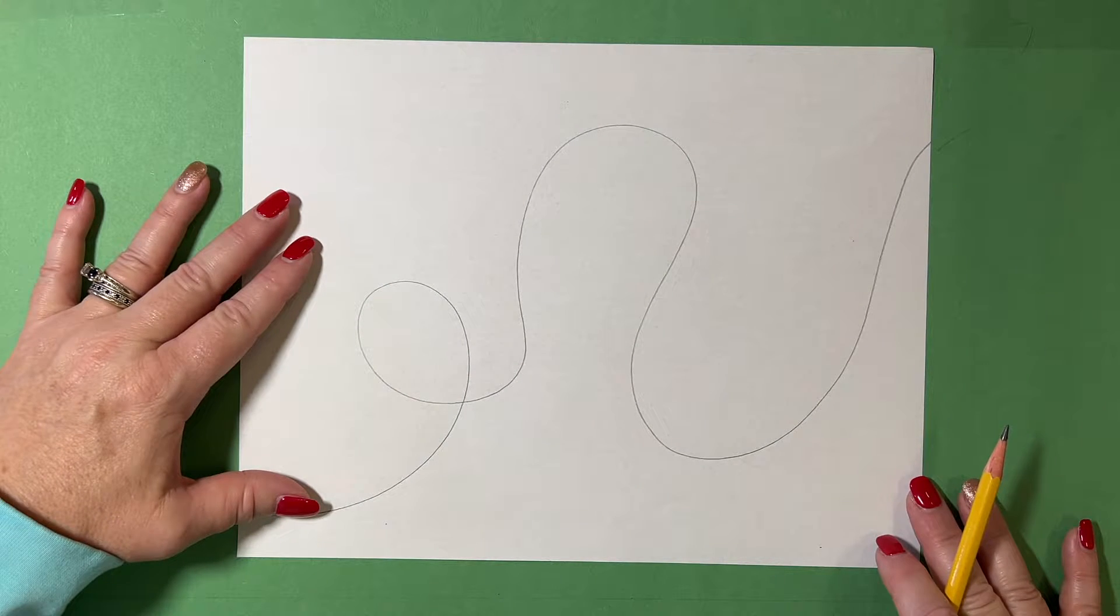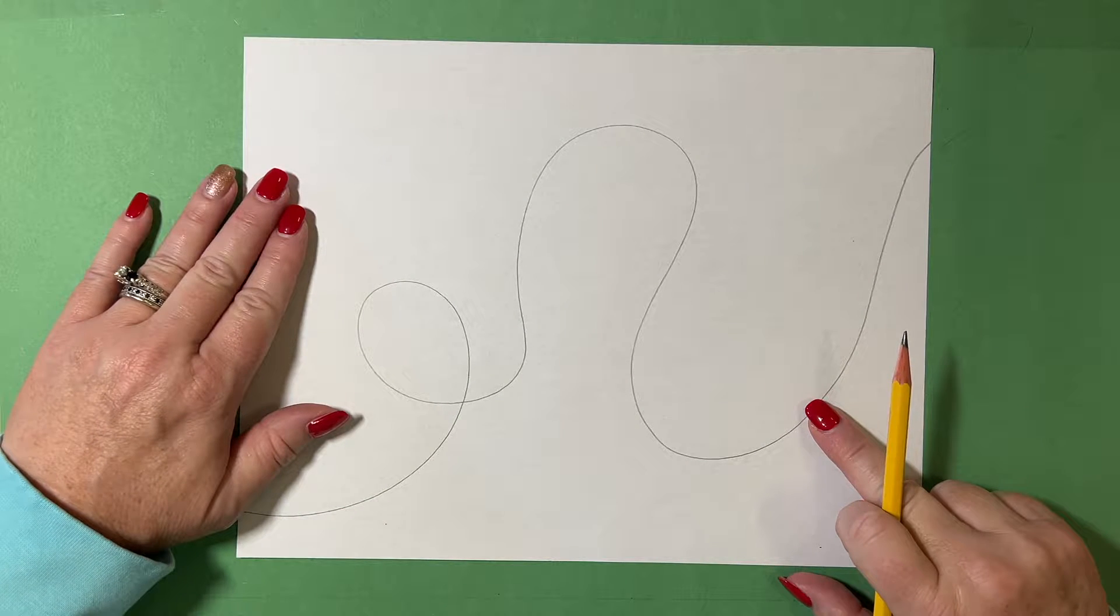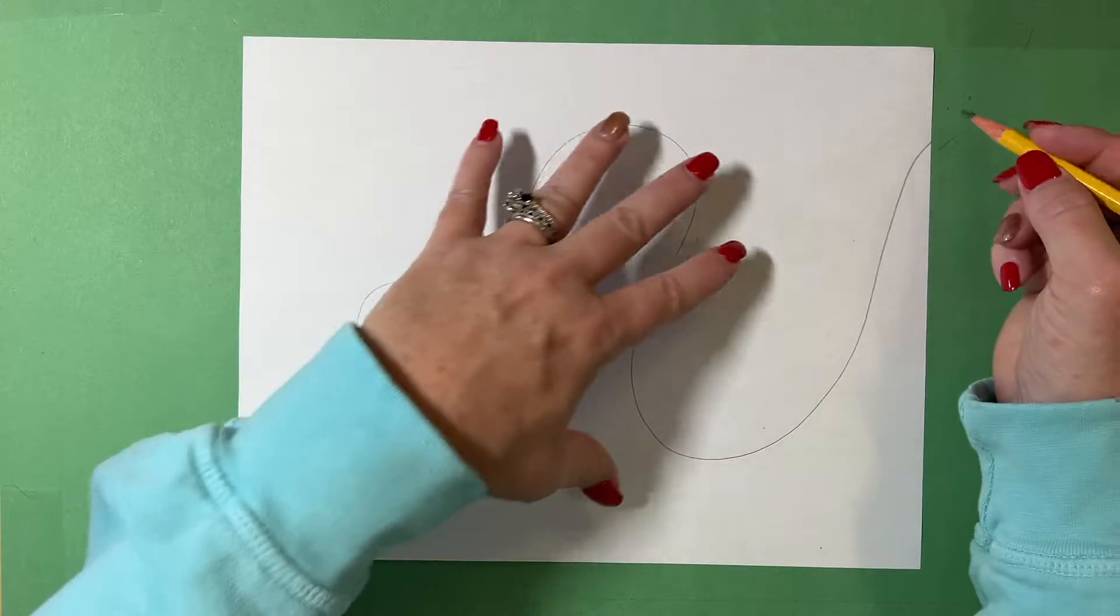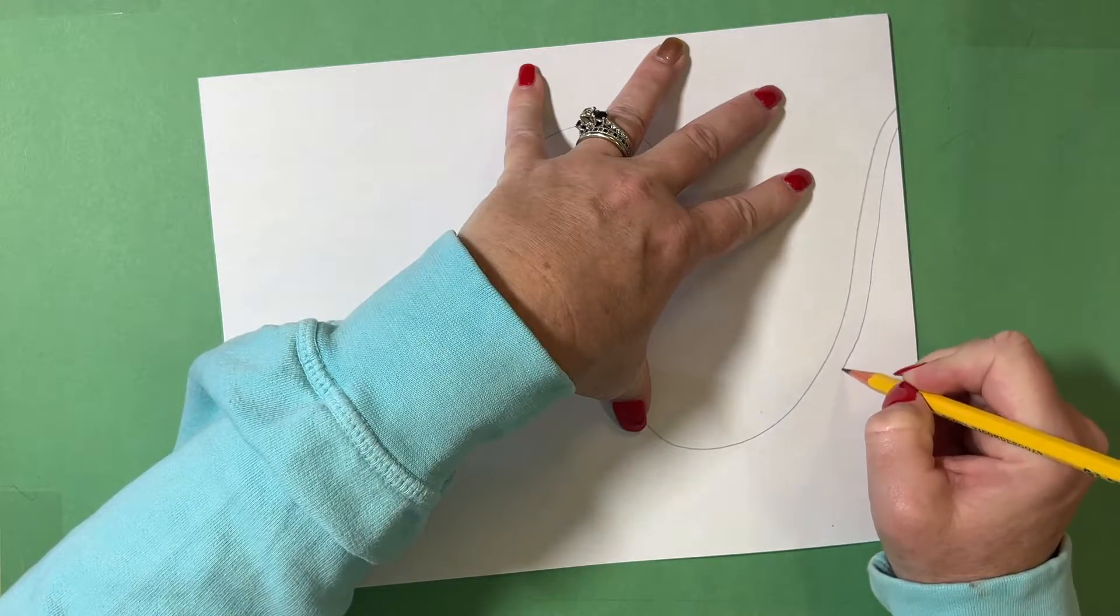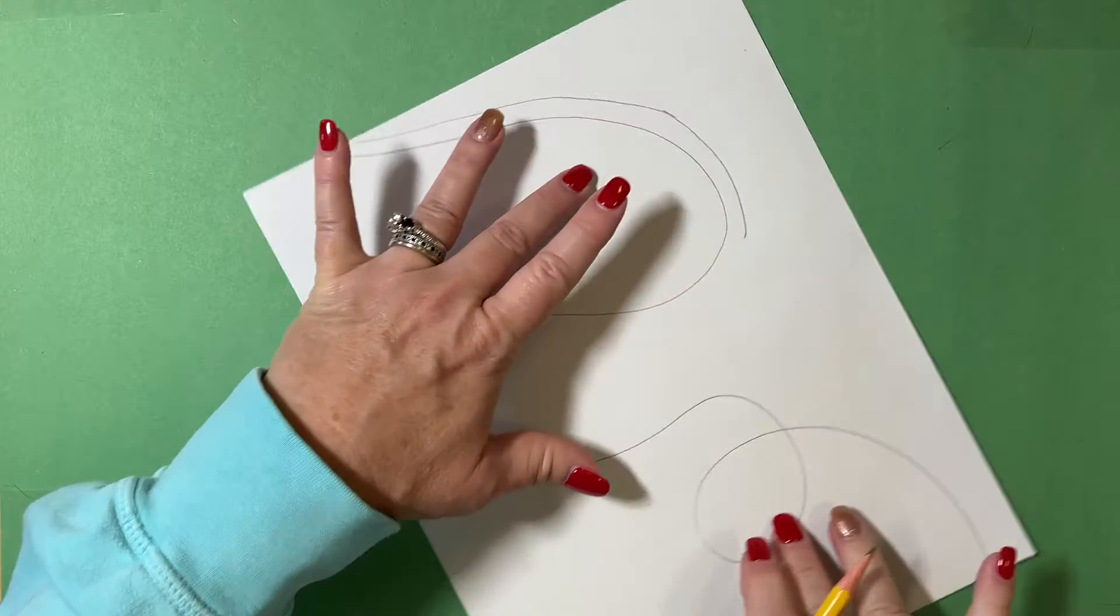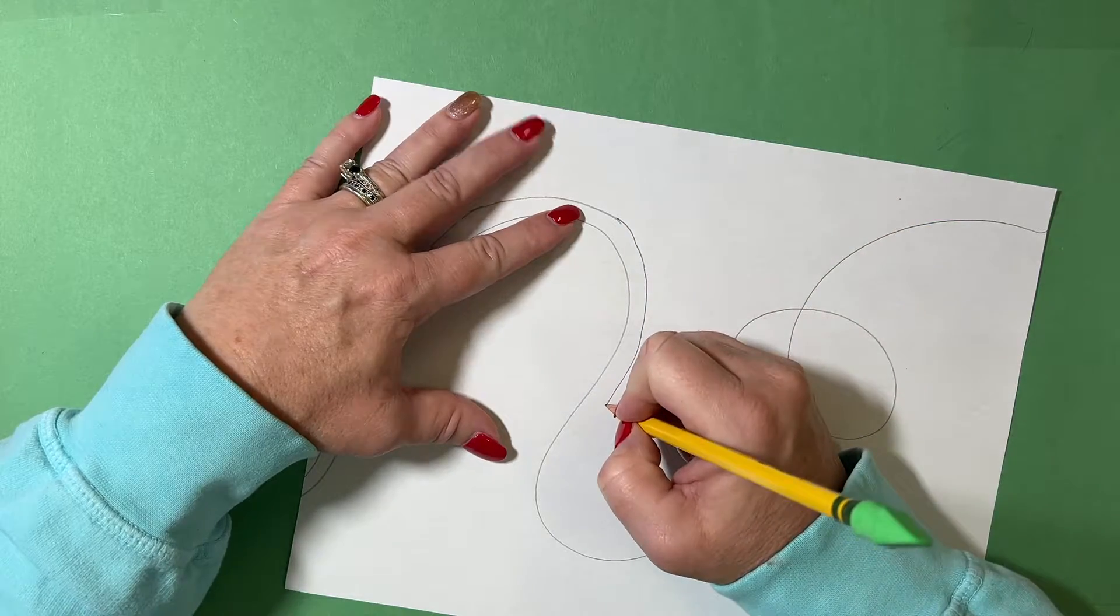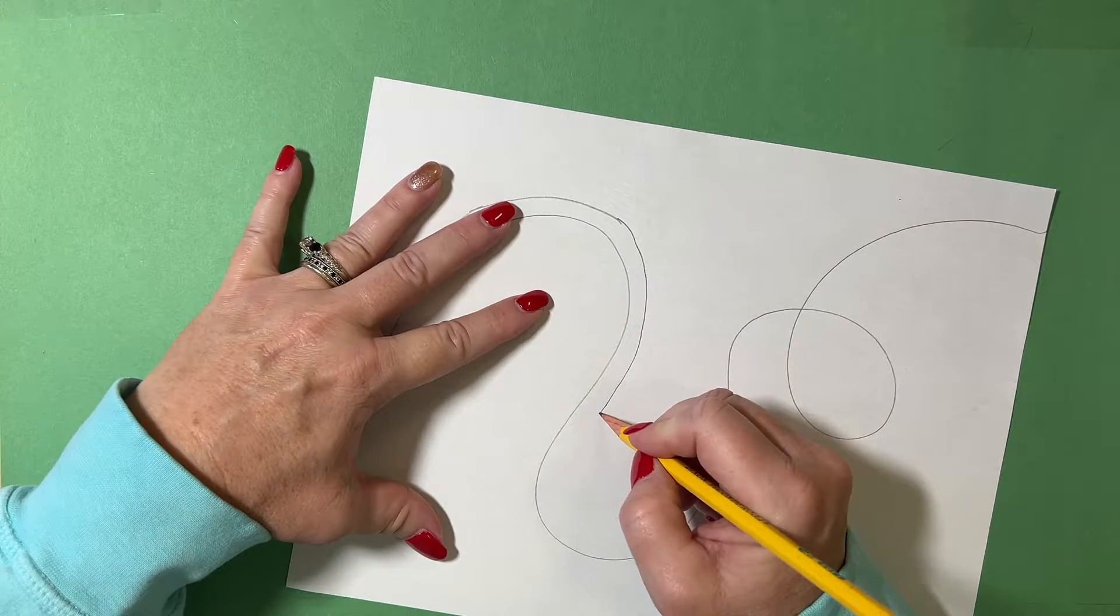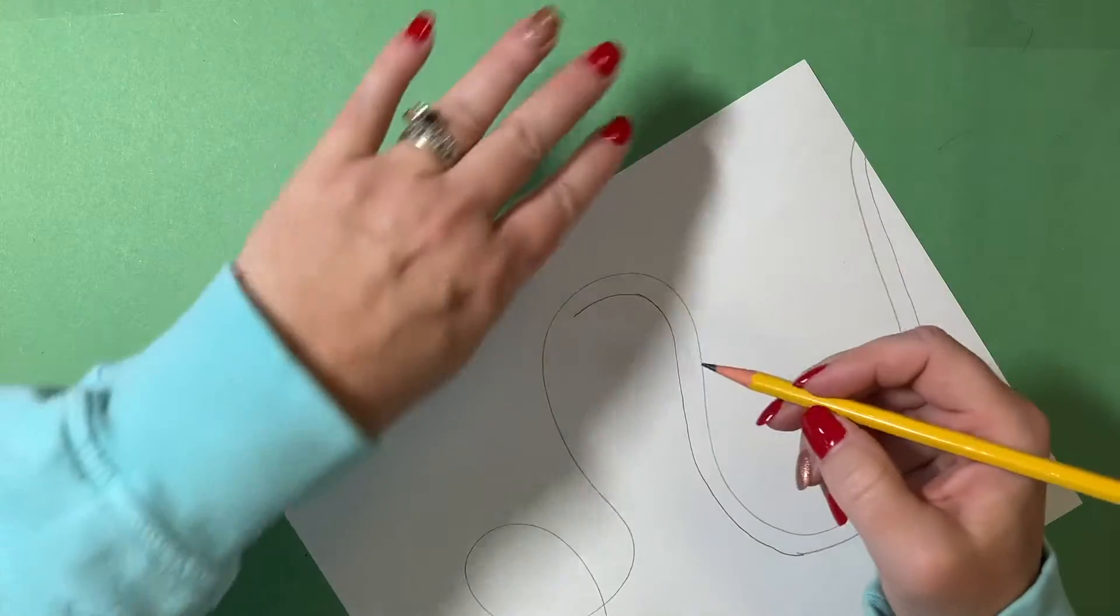The next step is to draw a parallel line right beside this line. You've already learned in art class, a parallel line is two lines that run side by side, but they do not touch. So I'm going to come back in and I am going to draw a parallel line right beside this one. I'm going to turn my paper as I draw this parallel line. It makes it easier for me to draw.